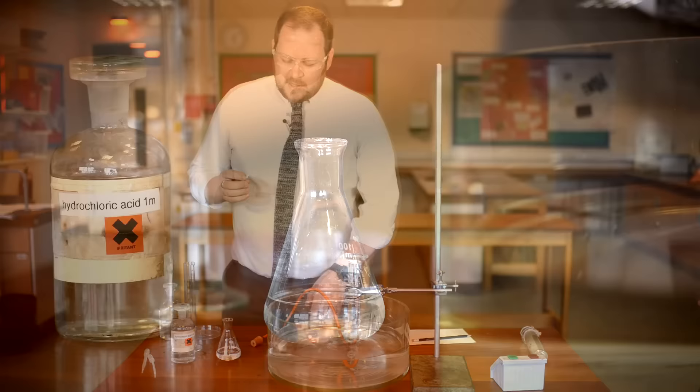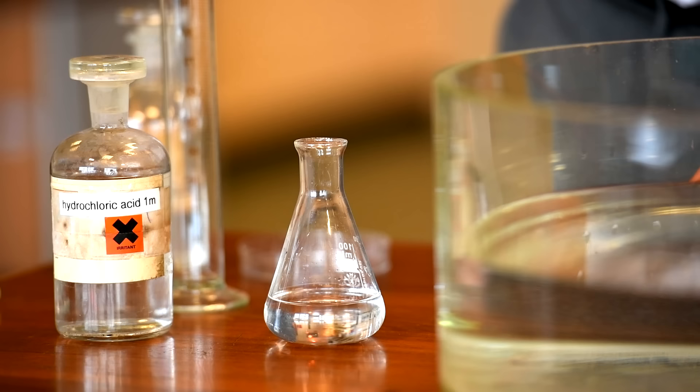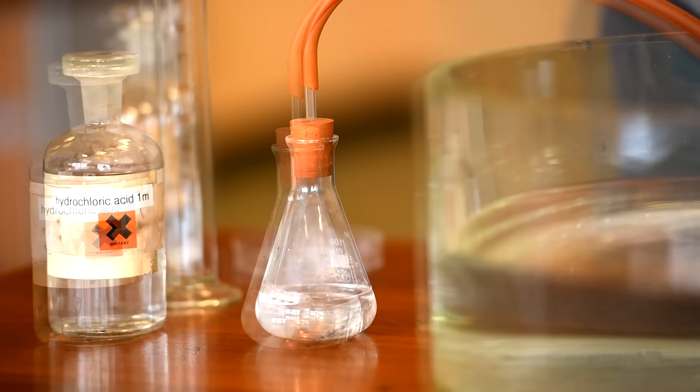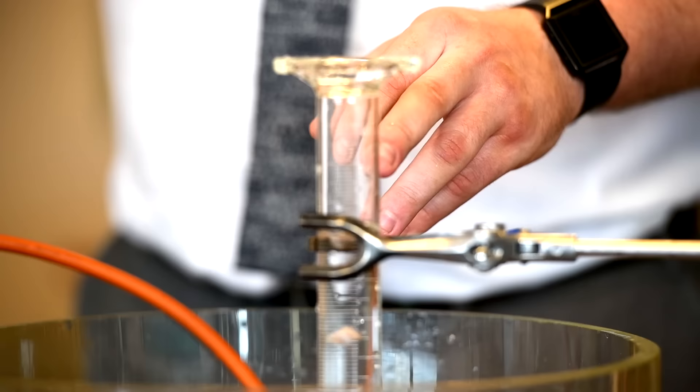You're going to add the magnesium to the conical flask and as you do this your partner is going to start the stop clock. At the same time you're going to have to put the bung immediately onto the top of the conical flask, making sure there's no room for the gas to escape. As the gas is produced, water is forced out of the measuring cylinder and you need to count how much gas has been produced every 10 seconds and record it in your results table.